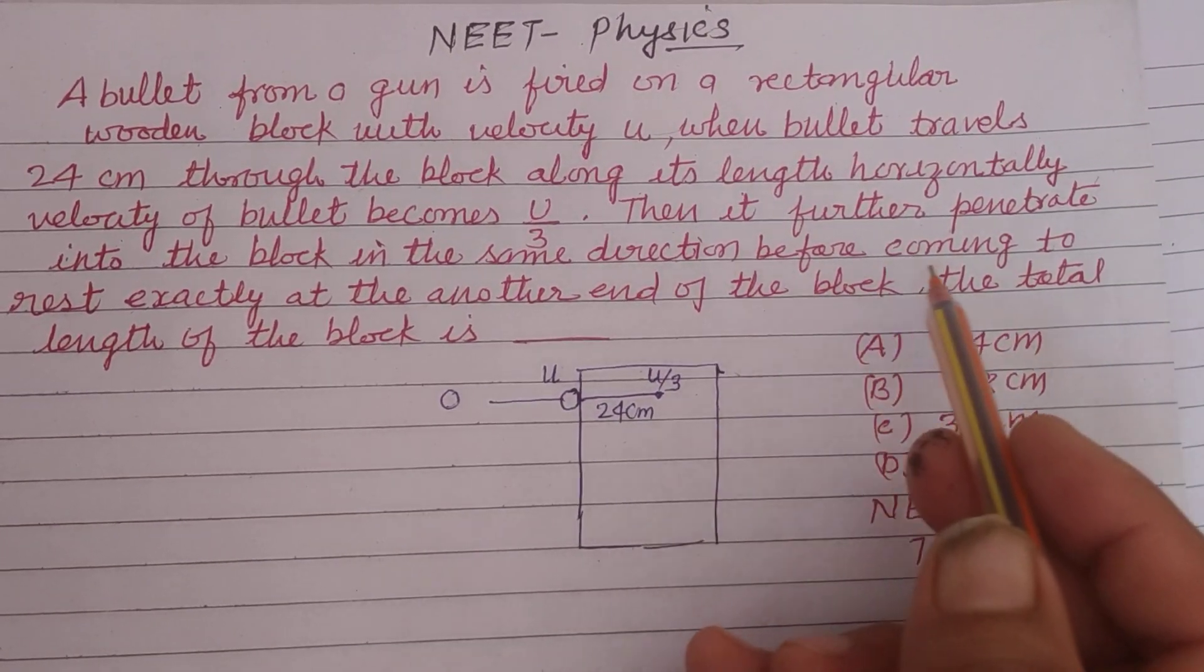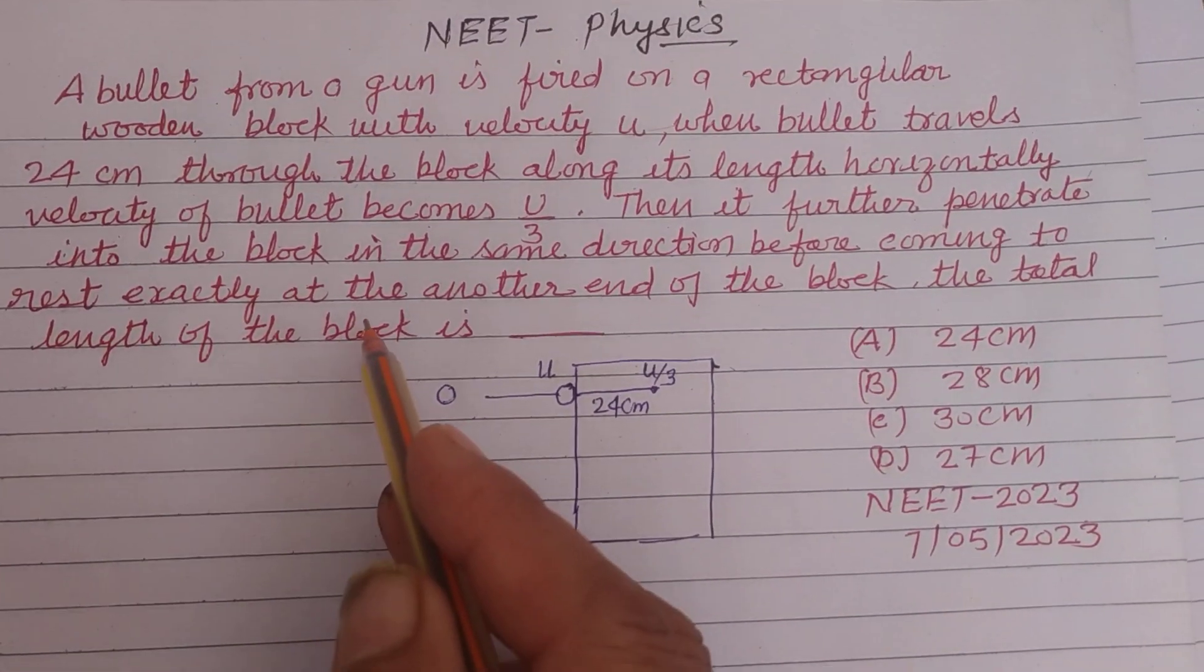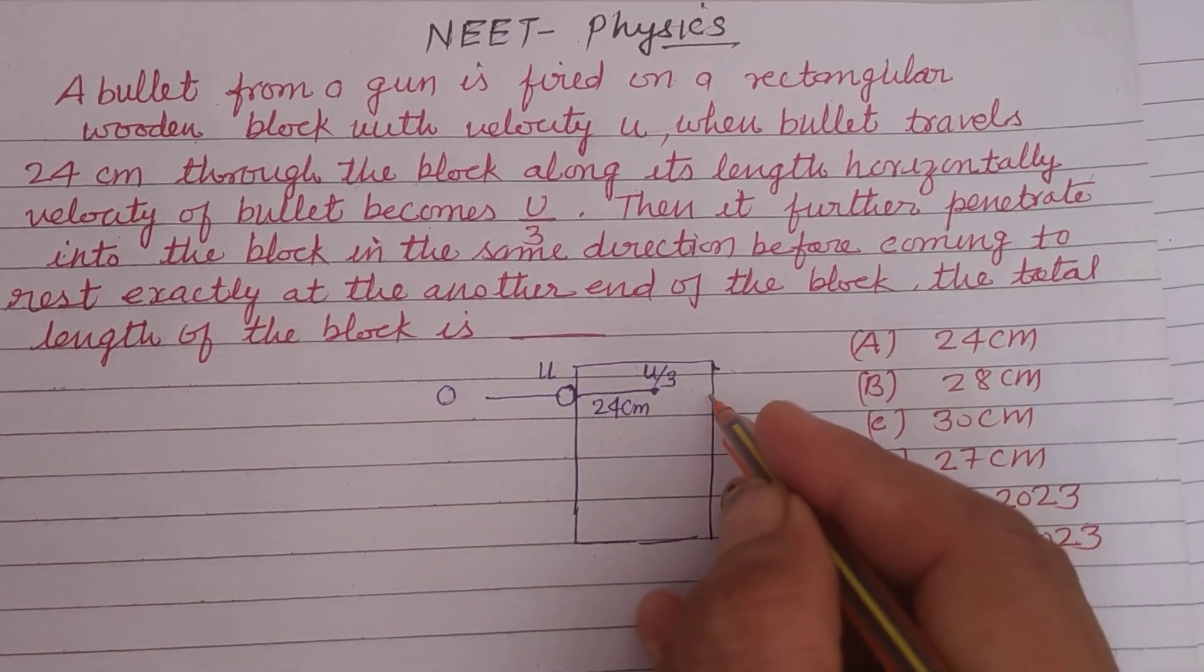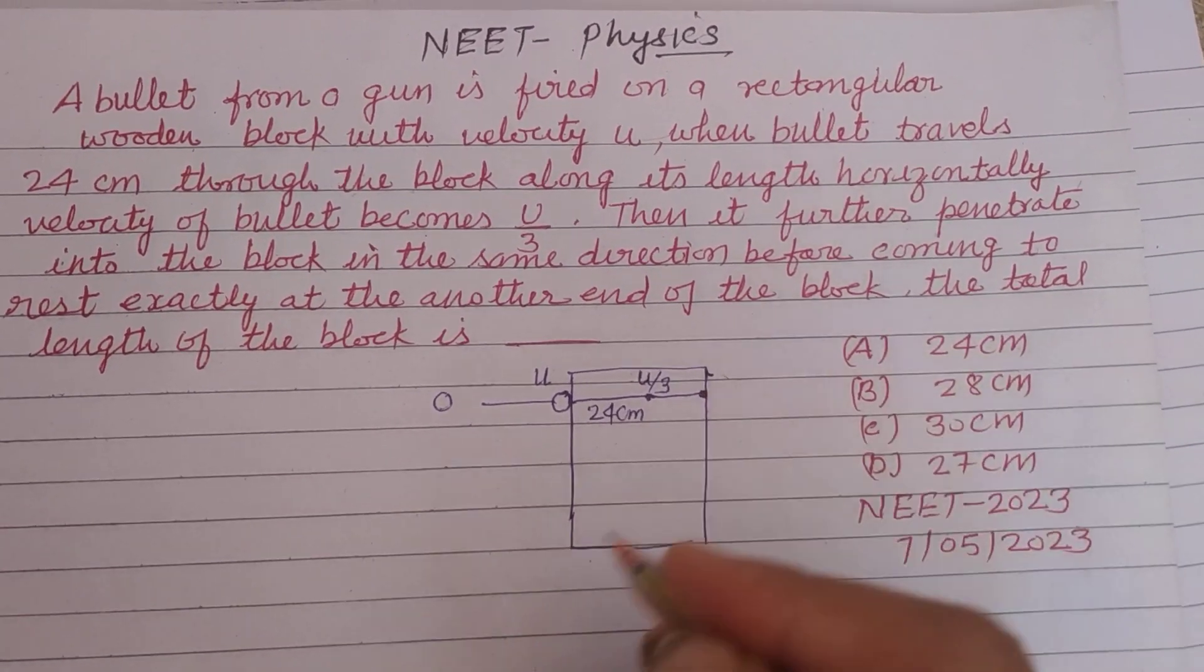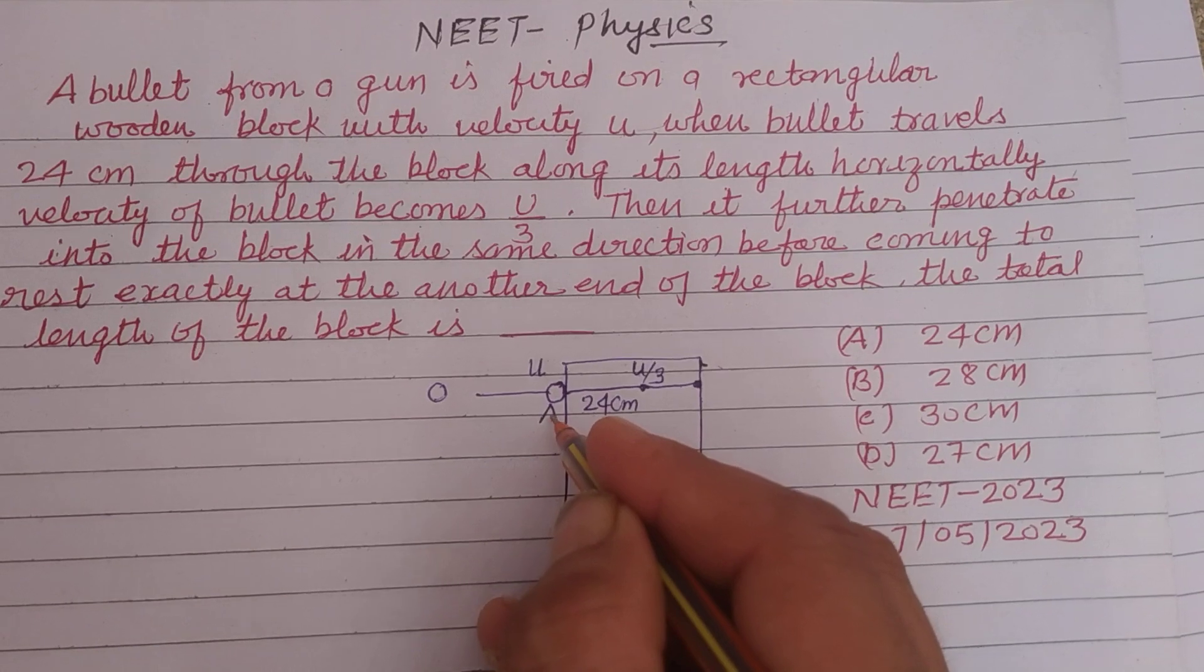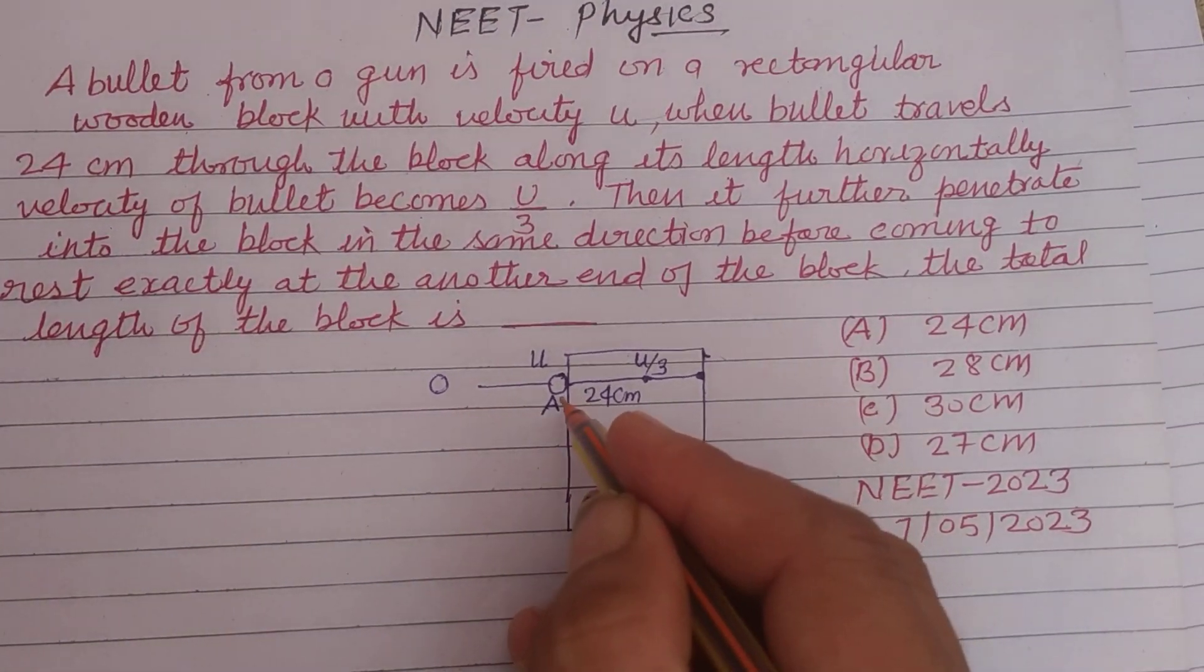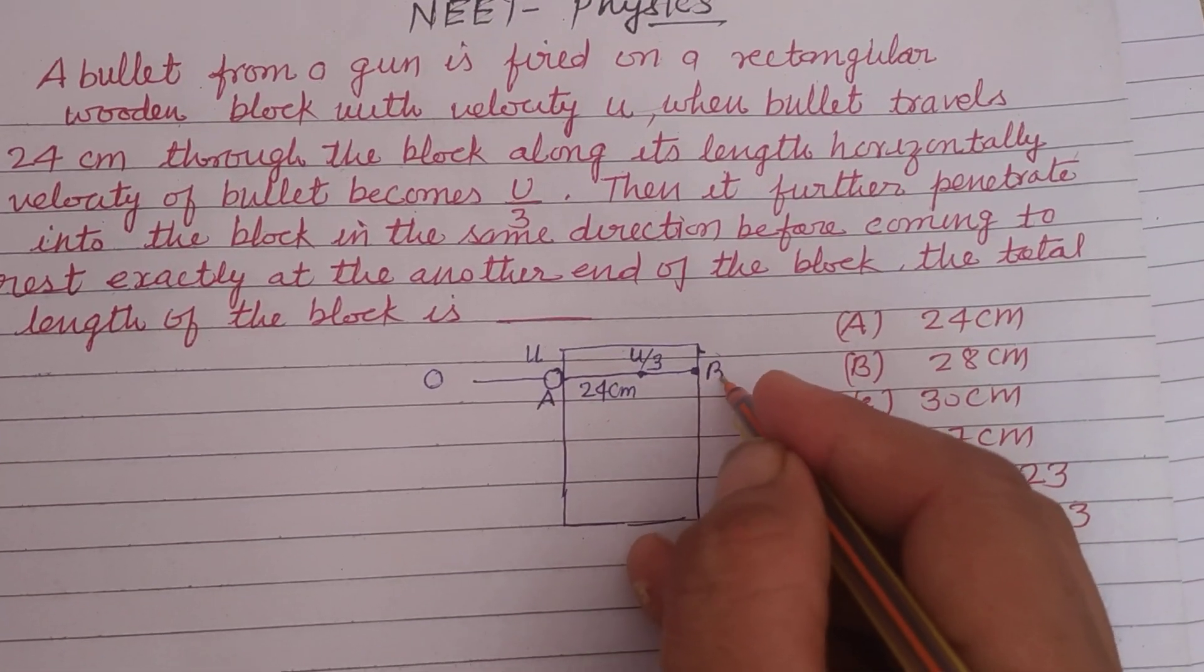In the same direction before coming to rest exactly at the other end of the block. So it comes up to the second end of this block. Let the starting point be A and the end point be